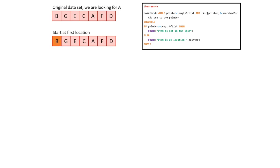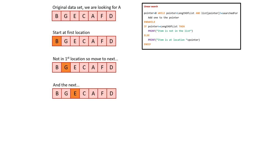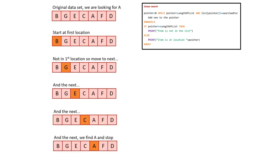We start at the first location. We discover what we are after is not in the first location, so we move to the next, and then the next, and then the next, and then the next, and then the next. Here we discover the item we are after — in this case A — and therefore we stop the linear search.